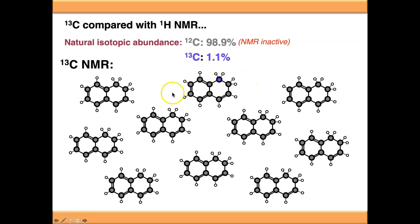The other thing it means is that we generally don't see coupling between carbon-13 nuclei. If you imagine this sample, the odds of having two carbon-13 nuclei directly next door to each other so they could undergo coupling is very small indeed. That's one of the reasons why we don't see carbon-13 to carbon-13 coupling in our carbon-13 NMR spectrum.